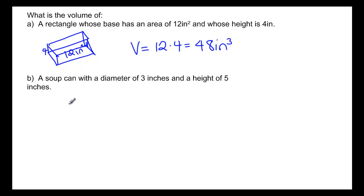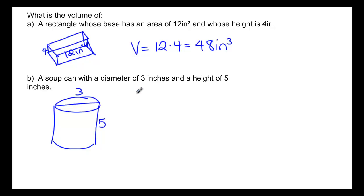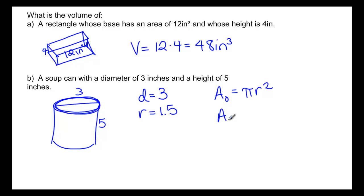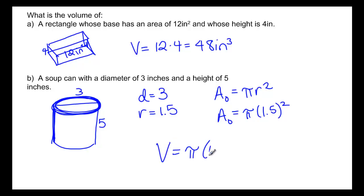The next problem is a soup can — a cylinder — with a diameter of 3 inches and a height of 5 inches. If the diameter is 3 inches then the radius is half of that, so the radius is 1.5. The area of that circle is π r², and then just like the rectangle, we multiply the area of the base by the height to get volume equals π r² times the height, in inches cubed.